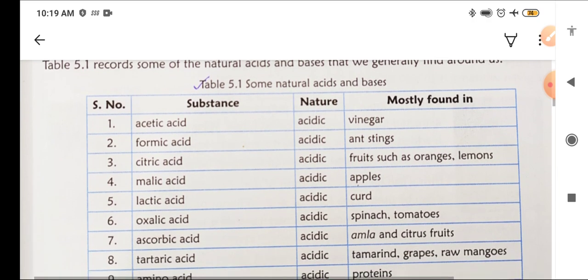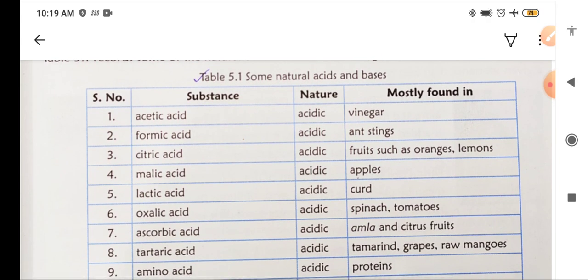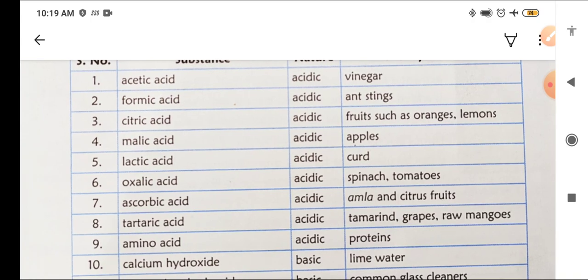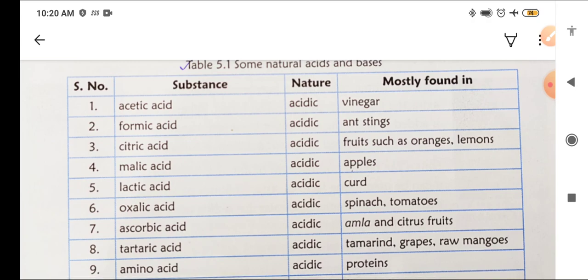Some natural acids and bases: acetic acid, which is acidic in nature, is found in vinegar. Formic acid is found in ant stings. Citric acid is found in oranges and lemons. Malic acid is found in apples. Lactic acid is found in curd. Oxalic acid is in spinach and tomatoes. Ascorbic acid is in amla and citrus fruits.